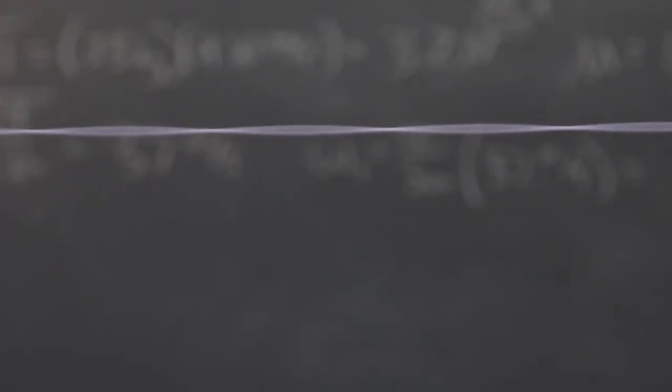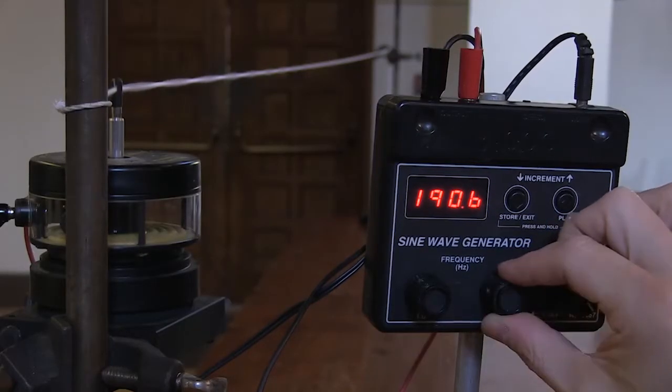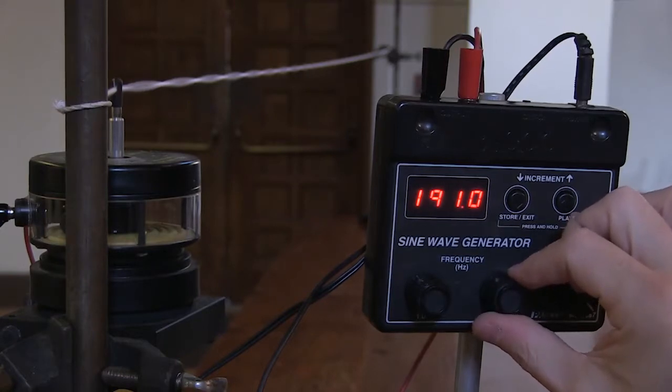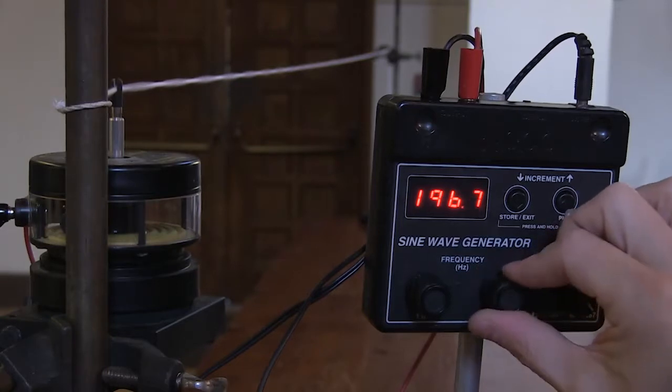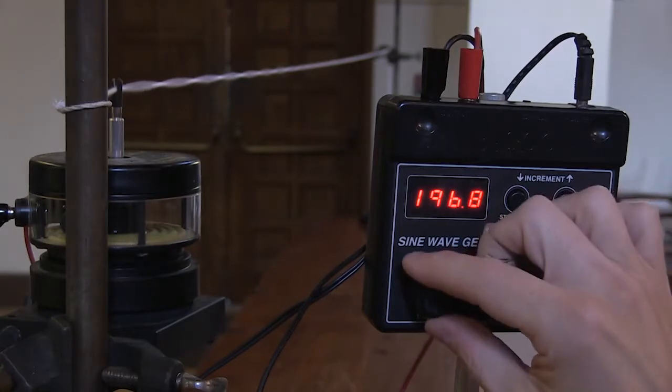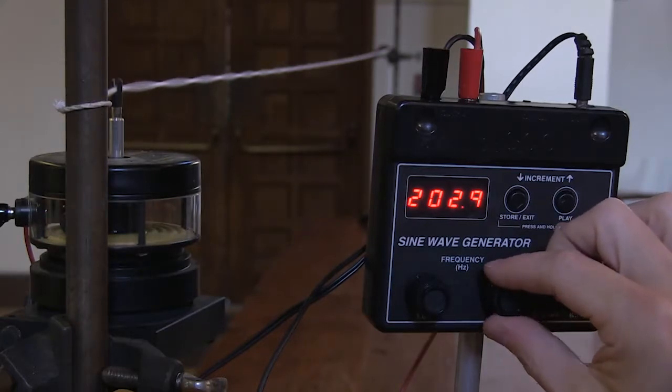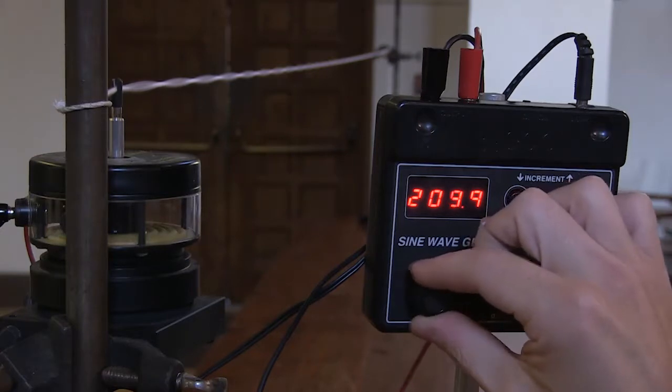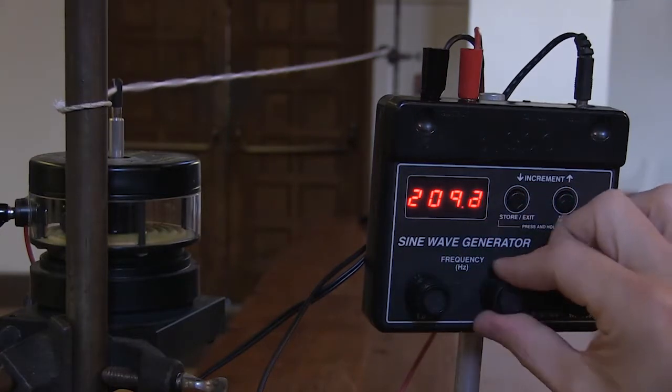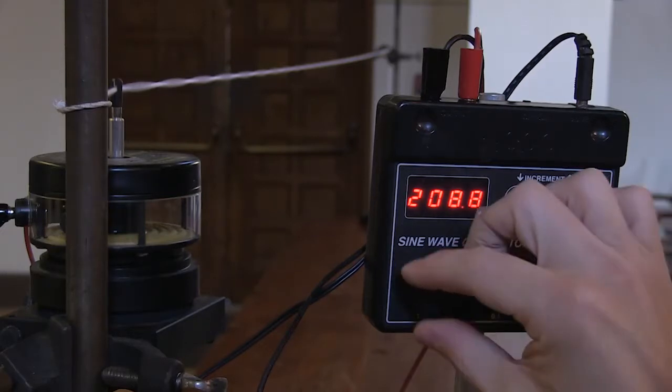30 is at 184.4, 31 is at 191, 32 is at 196.8, 33 is at 202.9, 34, 208.8.